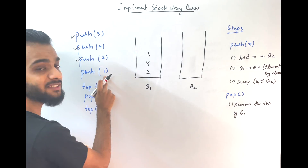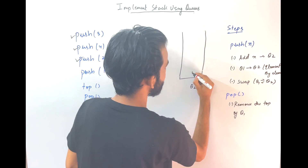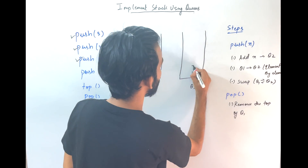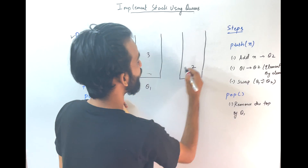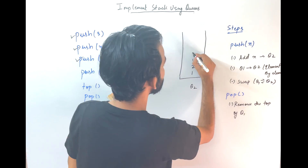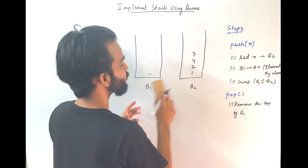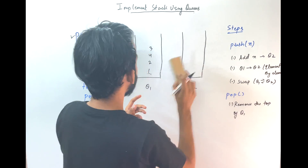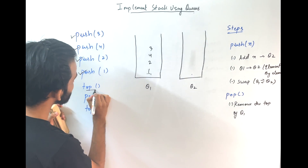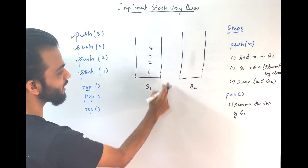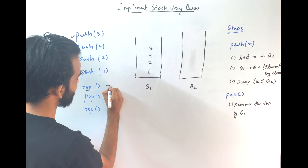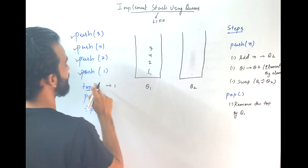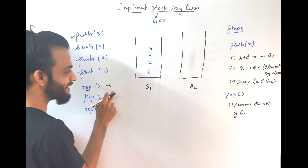Next, push of 1. Add 1 to Q2. Then element by element: first 2 will go, then 4 will go, then 3 will go. Now swap. So if you swap, you get 1, 2, 4, 3. Now this operation is done. If someone asks you for the top, the topmost element will be the front of Q, which is 1. Makes sense because stack is last-in first-out — 1 was last inserted, so top gives you 1.